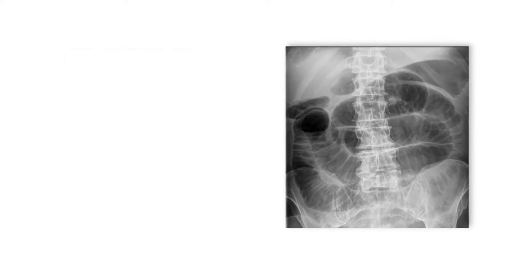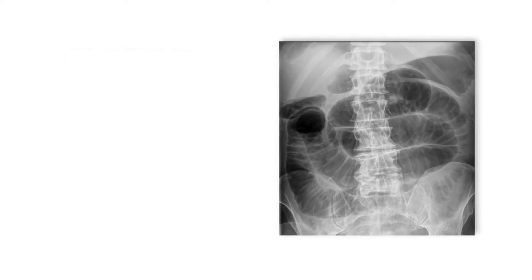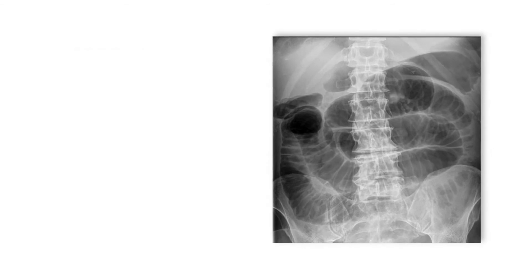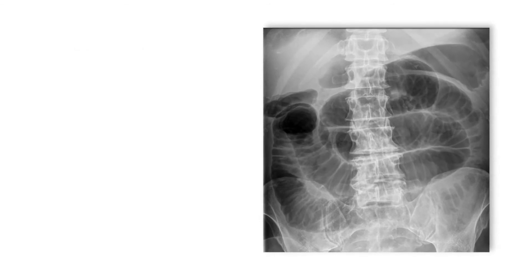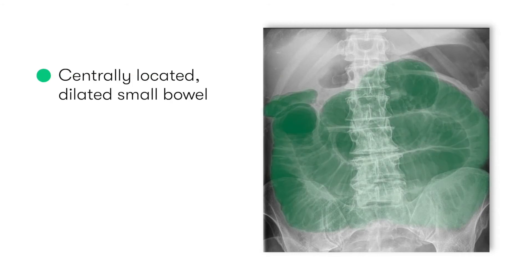Looking more closely, in abdominal x-rays of small bowel obstruction, the features we normally expect to see are centrally located dilated small bowel with a diameter of more than 3cm.